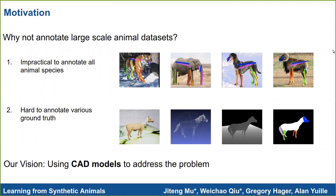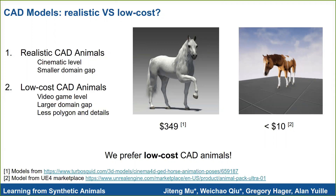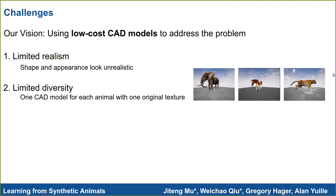There are two types of CAD models available: realistic models and low-cost models. Realistic models are expensive and come with less domain gap. In comparison, low-cost models look less realistic and come with a larger domain gap. In this project, we choose to use low-cost CAD models. However, since low-cost CAD models have limited realism and limited diversity, we need to develop an efficient algorithm to bridge the domain gap.